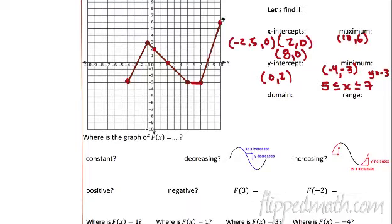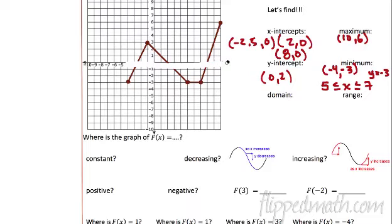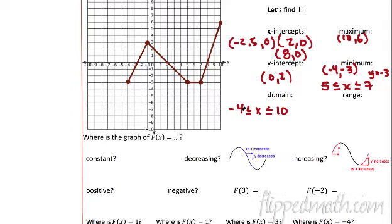The domain — all the x values. Where are the x values? It starts here at negative four. The graph goes all the way over to this part right here — these are the x values that get used from here to here, negative four to ten. So the way we write that: negative four is less than or equal to x, less than or equal to ten. This means x has to be bigger than negative four but x is less than ten. So we're going to use a compound inequality.